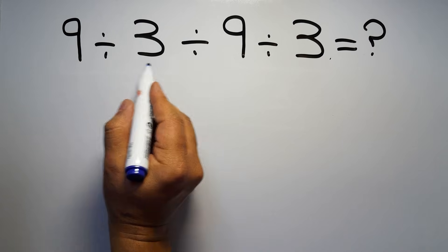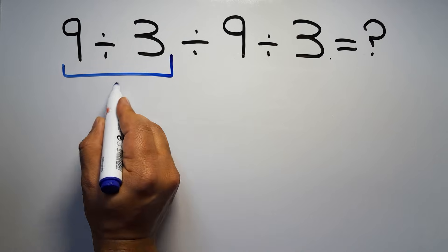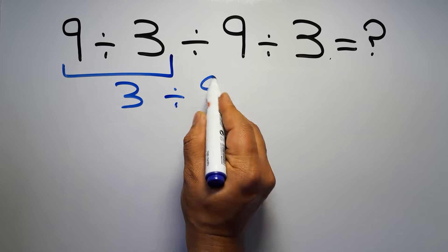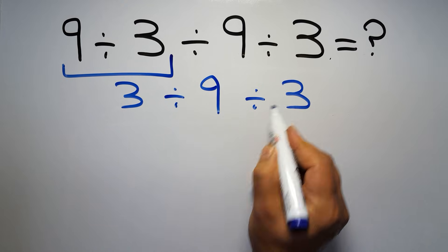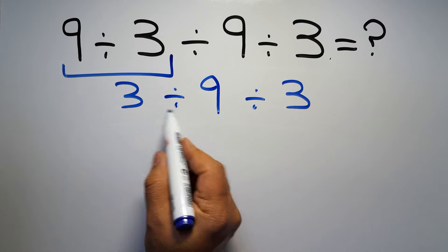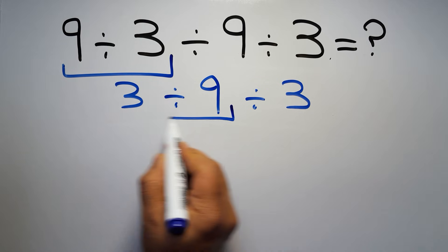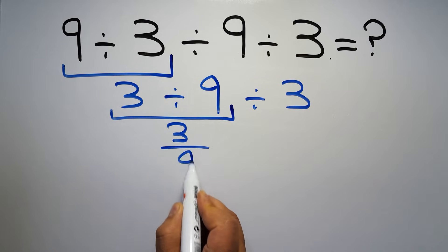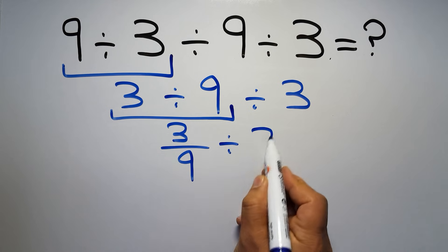So first, this division: 9 divided by 3 gives us 3. Now we have 3 divided by 9 divided by 3. Next, we take 9 divided by 3 and write it as the fraction 3 over 9, then divided by 3.